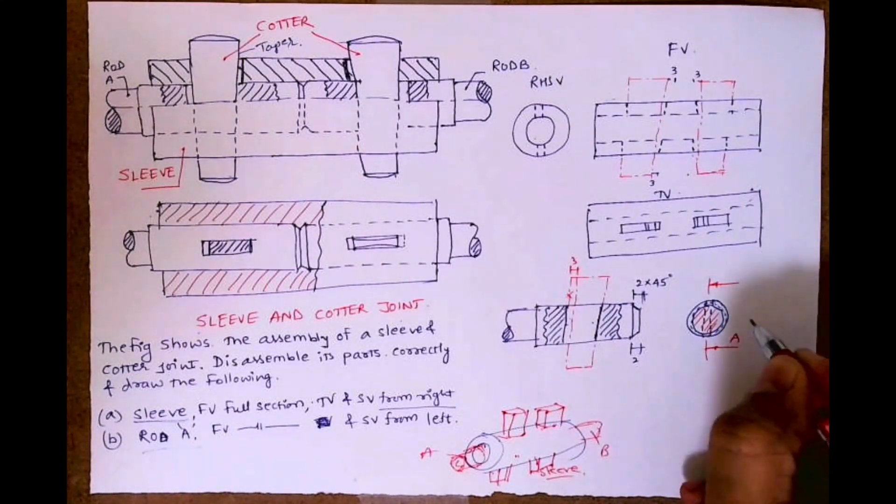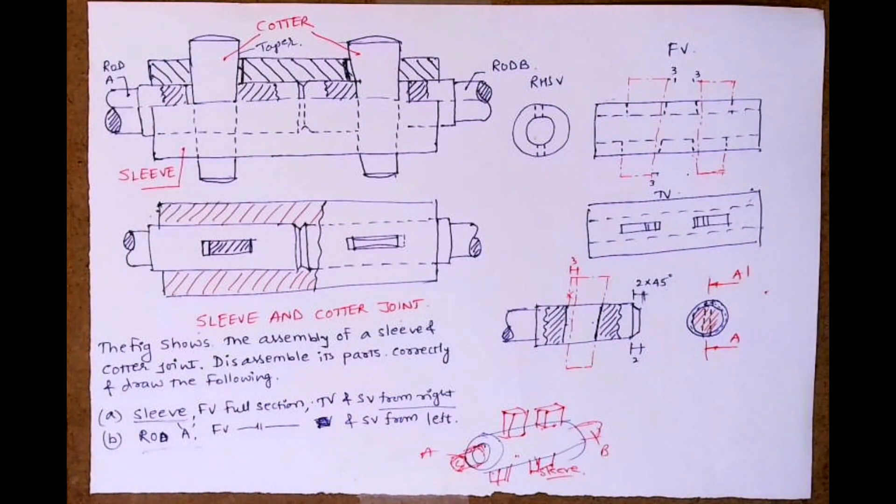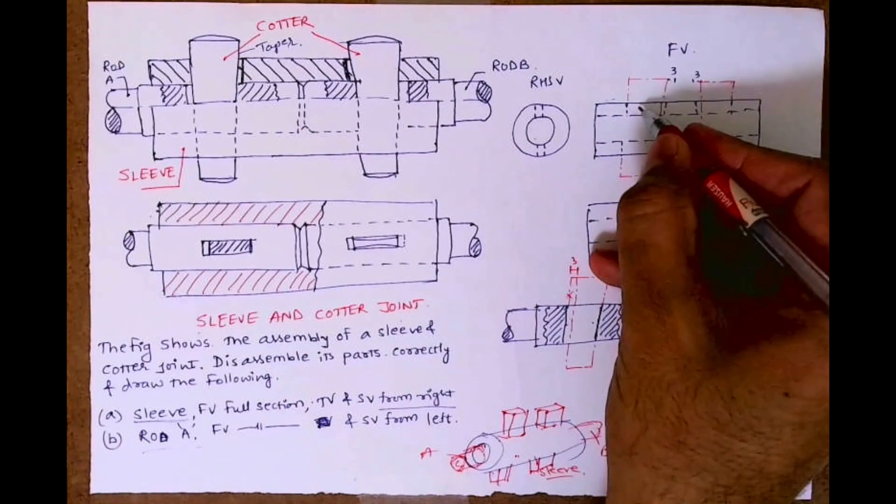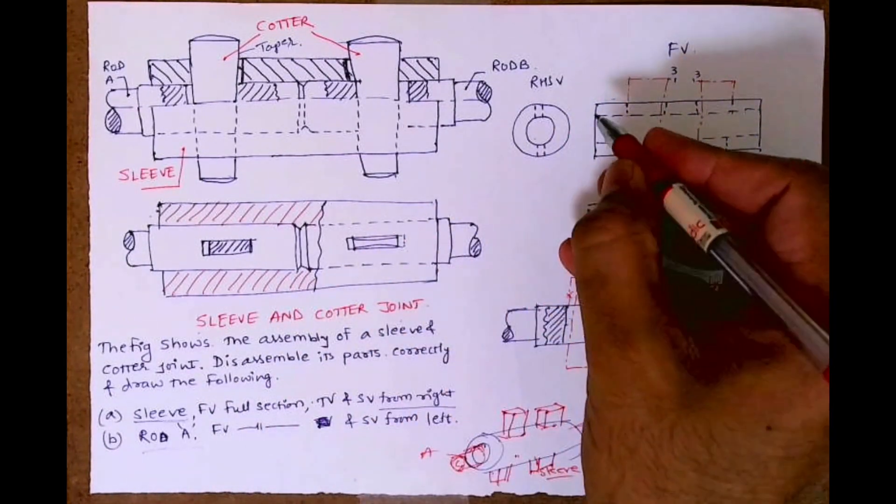We need to show the cutting plane line which is very important: A-A dash. For rod A full section, here also we have to show full section.